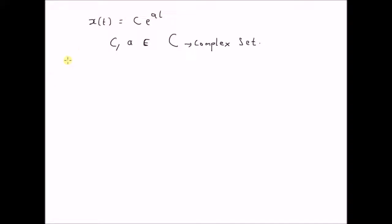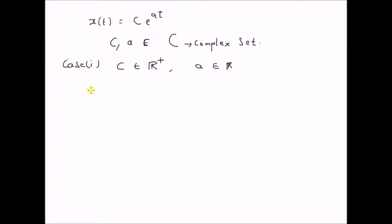Let us look at case one. Assume that c is a positive real number — that is, c belongs to the set of positive real numbers — and a belongs to the set of real numbers. Then the signal x(t) equals c times e^(at). For simplicity, let us assume that c equals 1.